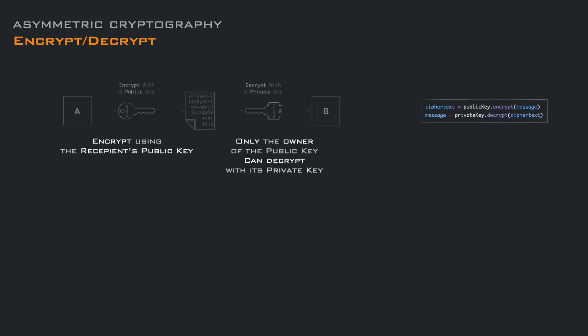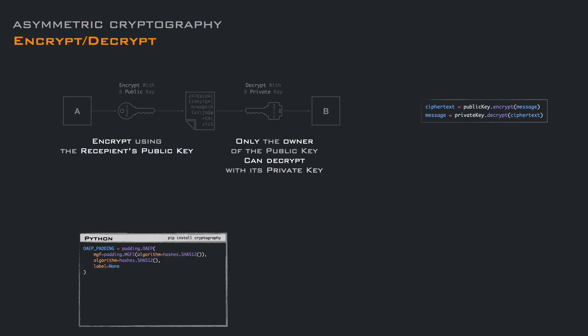Let's see the methods to encrypt and decrypt the data. We have to specify the algorithm we are going to use — in this case RSA-OAEP. There are various padding schemes, and again, if you want to interact with different languages, you have to pick the ones supported by all of them. By using the public key, we can encrypt the message and get back the cipher text. On the other side, with the private key, we can decrypt the message.